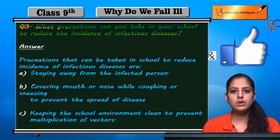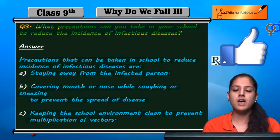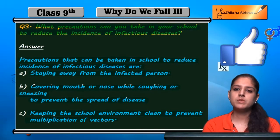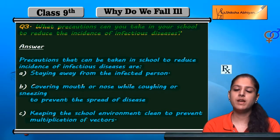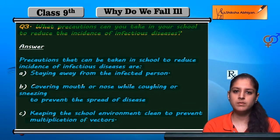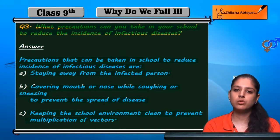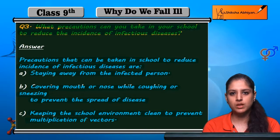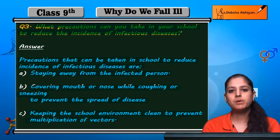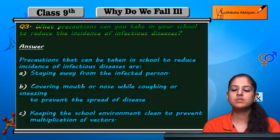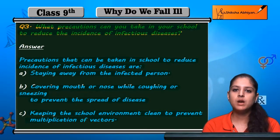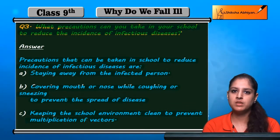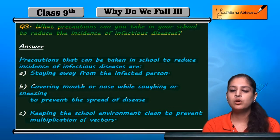The third precaution is keeping your school environment clean. If the school environment is clean, mosquitoes, flies, and other vectors will stop breeding and multiplying. Proper and timely cleaning is very necessary. Make sure to clean your surroundings, your benches, and your classroom — at least the place where you are sitting.